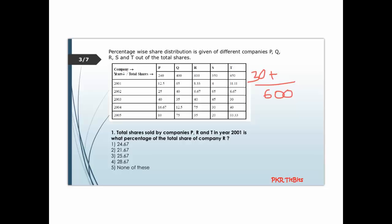For company R in the year 2001, it is 8.33 percent times 600. 8.33 percent is 1/12, so 1/12 times 600 is 50. Next, for company T it is 11.11 percent, which is 1/9, so 1/9 of 450 is 50.